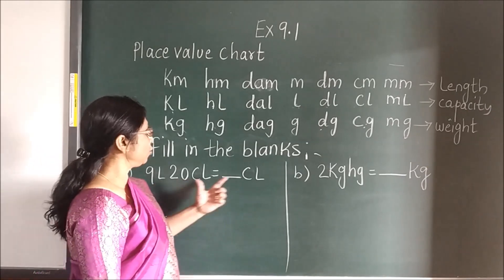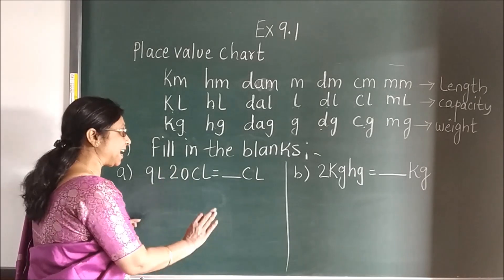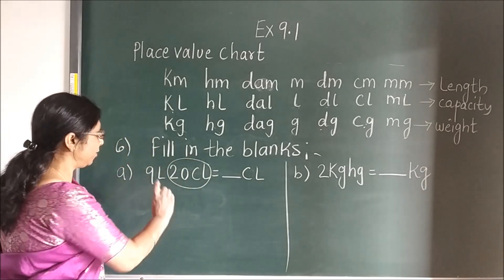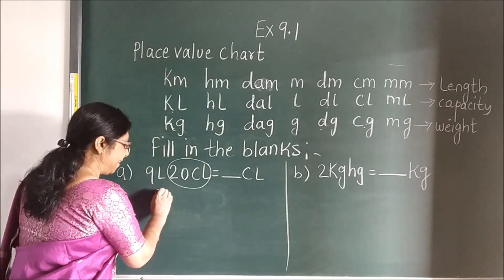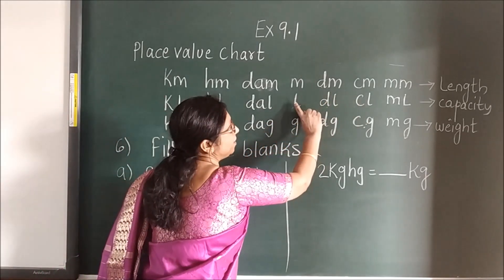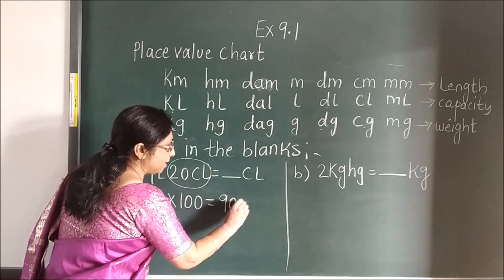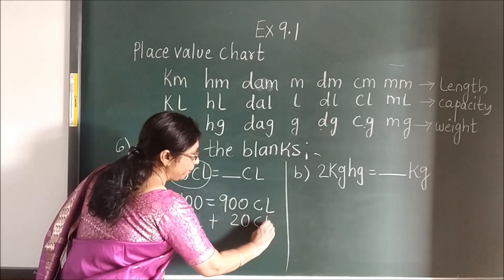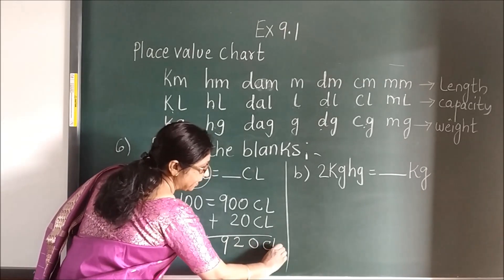Now here — CL to CL. There is no need of conversion, children — you cannot convert CL to CL, that is the same. So you just circle it; this is not to be converted. What has to be converted is L to CL. So you write your 9 — L to CL, which side are you moving? Right. And how many times? 2 times. So multiply by 100. You will get the answer: 900 CL. And what remains? You will add, children. When you add, what will you get? 920 CL.